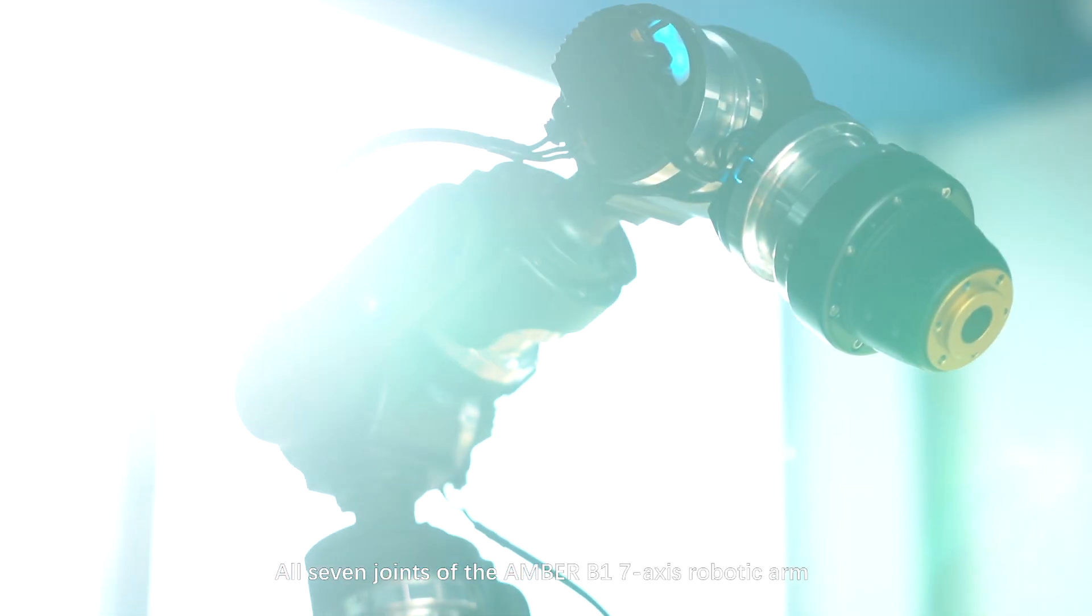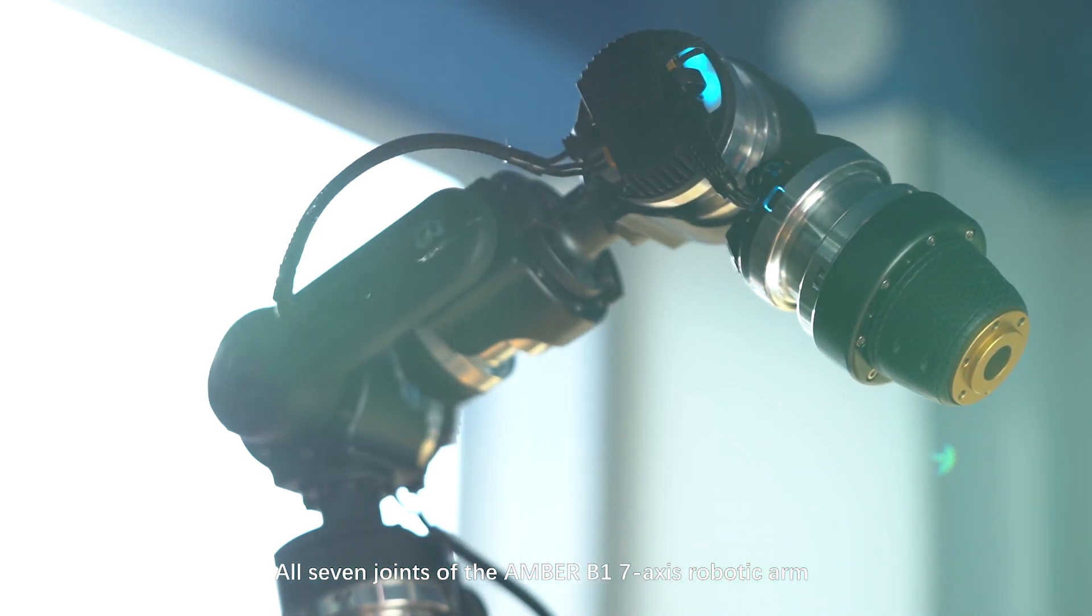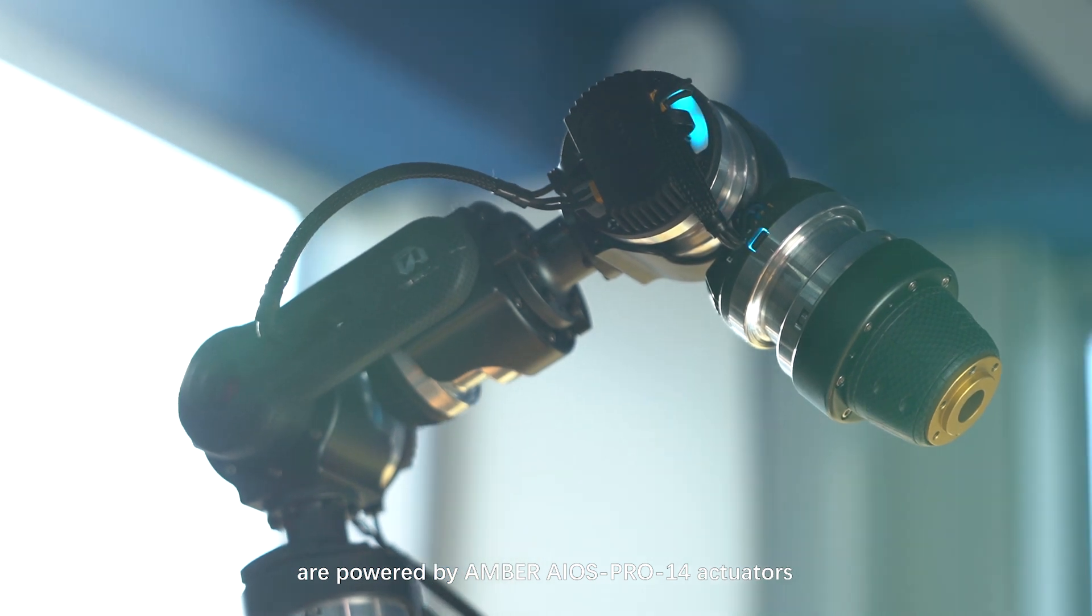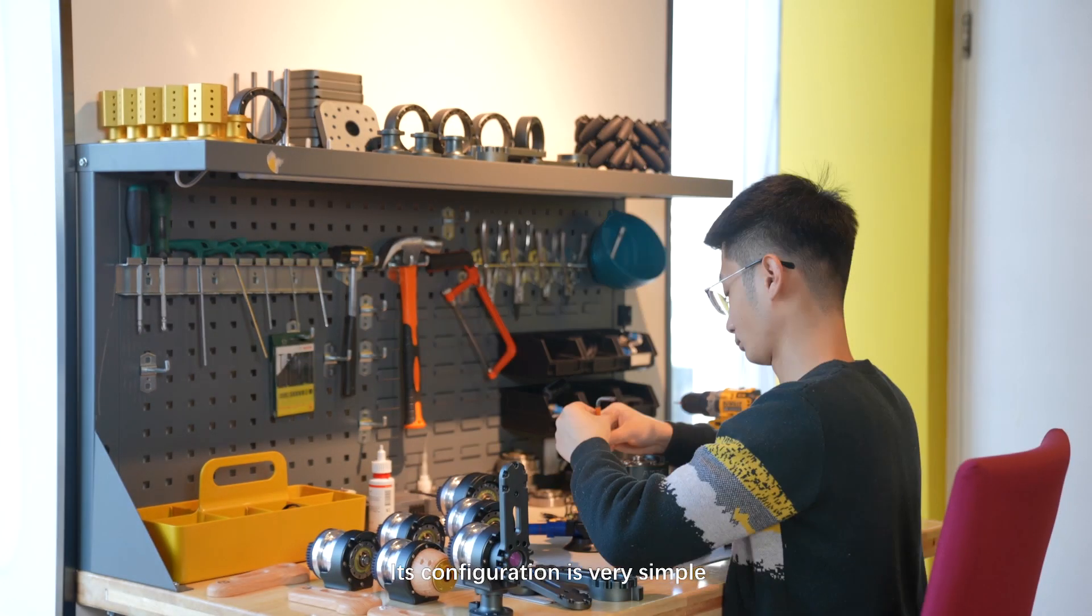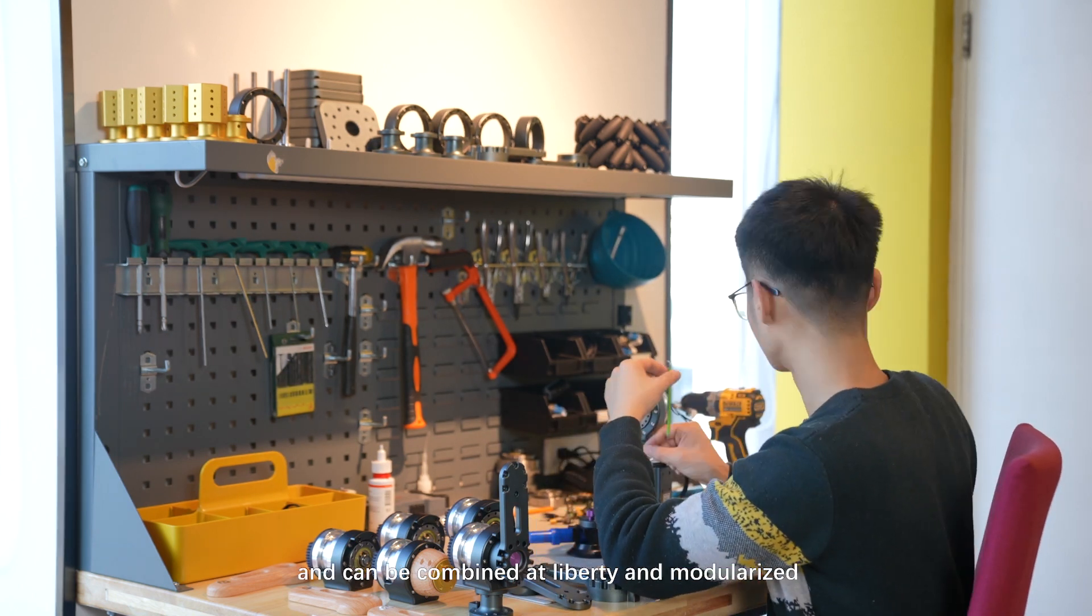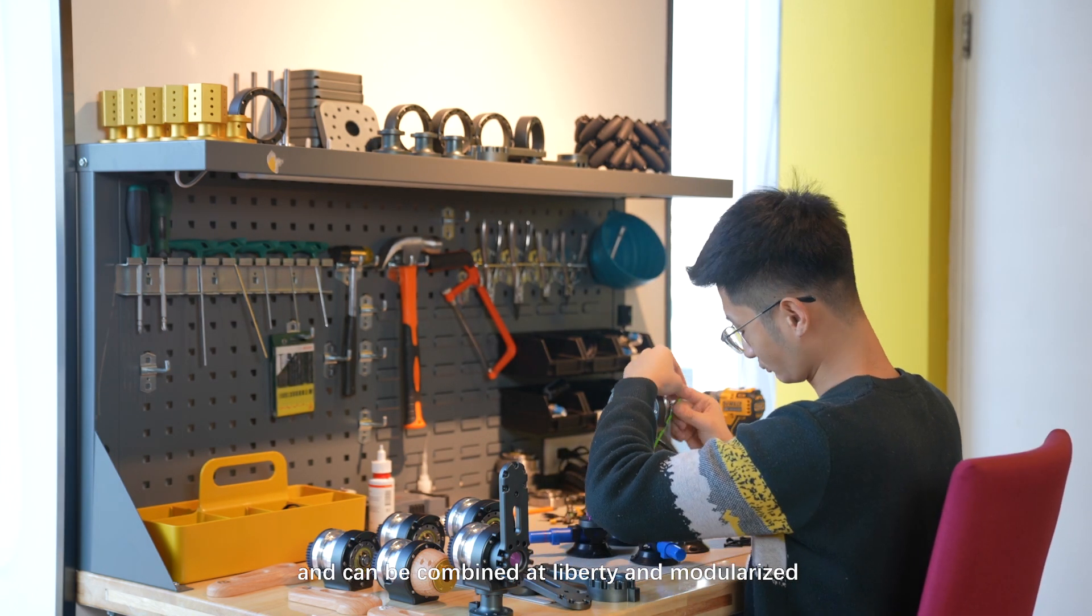All seven joints of the Ember B1 7-axis robotic arm are powered by Ember AIOS Pro 14 actuators. Its configuration is very simple and can be combined at liberty and modularized.